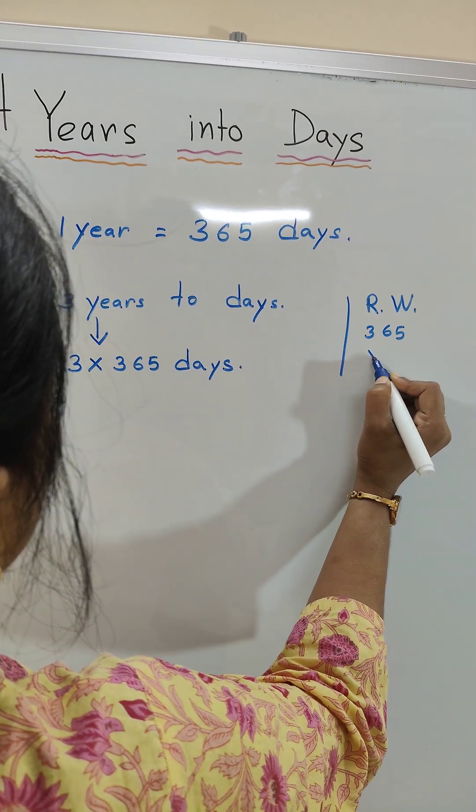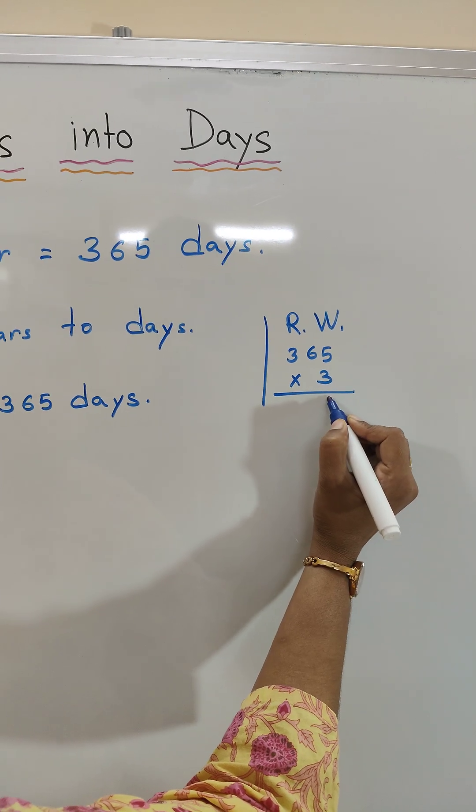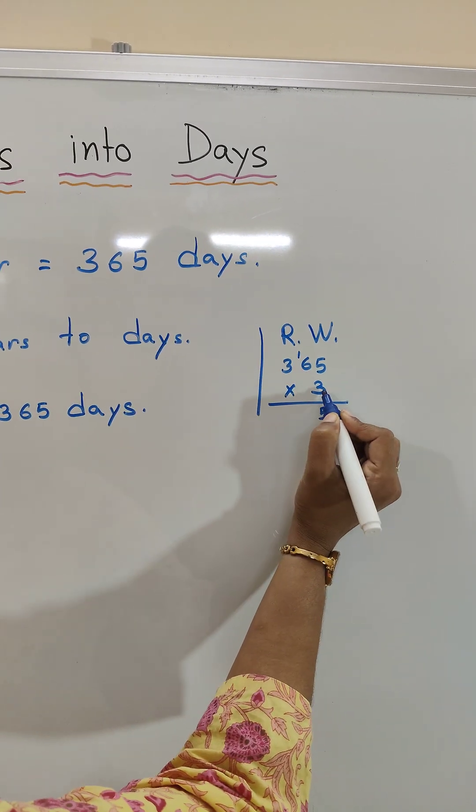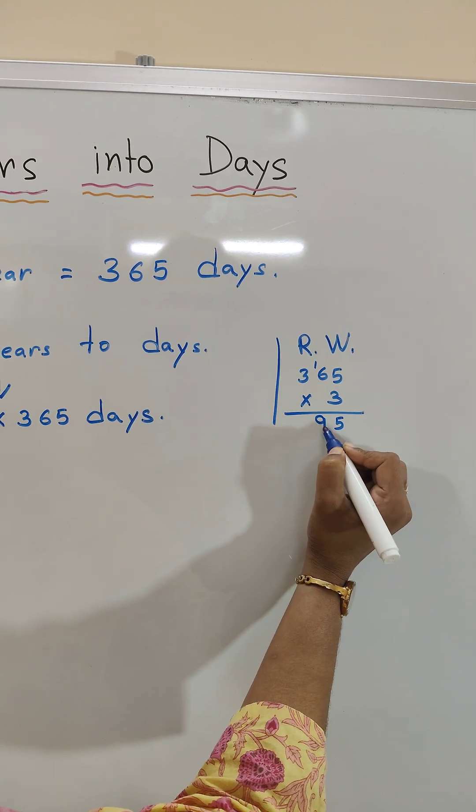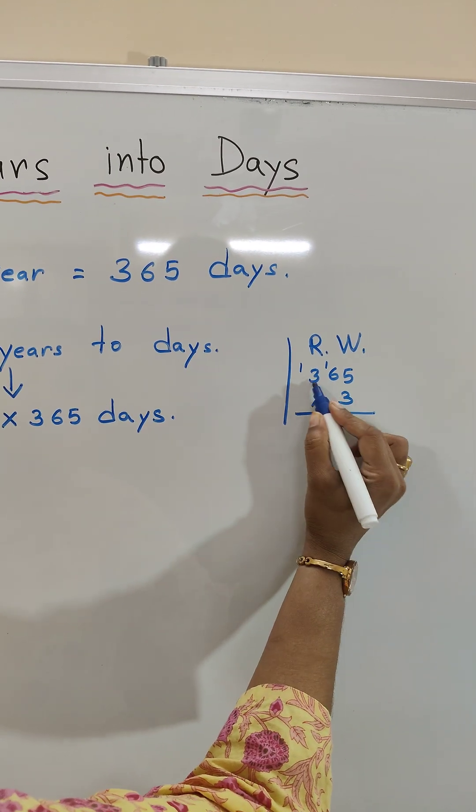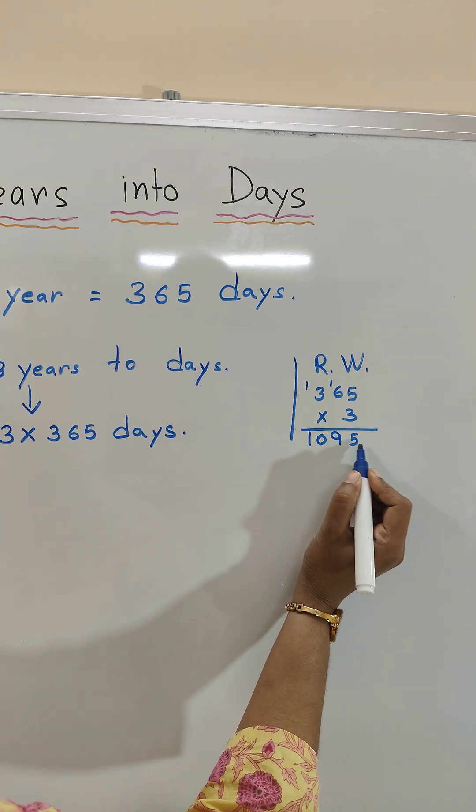365 times 3. 3 times 5 is equal to 15 carry 1. 3 times 6 is equal to 18 carry 1 will get 19 carry 1. 3 times 3 is 9, 10. So 1095.